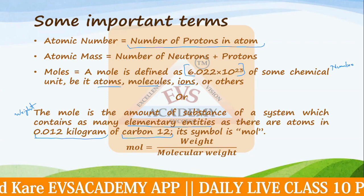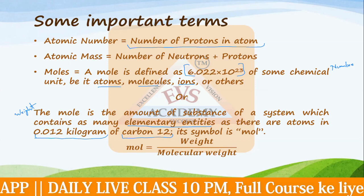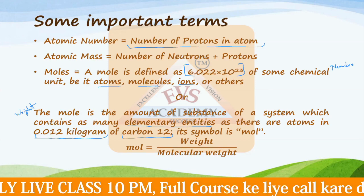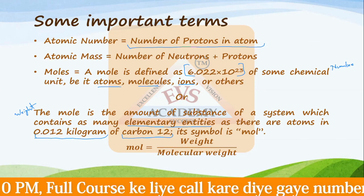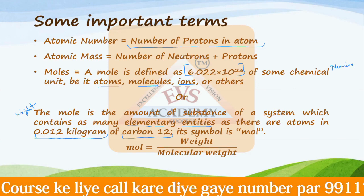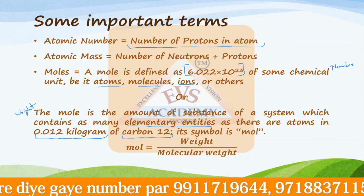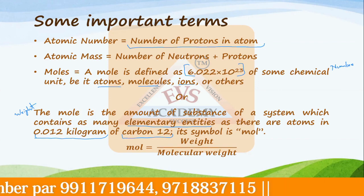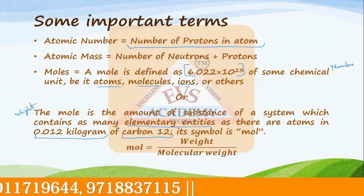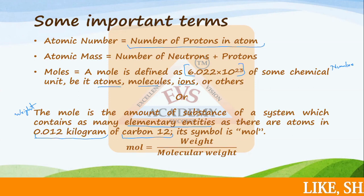So you can define one mole either by weight or by number — both are valid. One mole contains 6.022 × 10²³ molecules, or equivalently, it contains the same number of elementary entities as 0.012 kilograms of carbon-12. One definition uses the exact number; the other uses carbon as a reference. Both are equal.